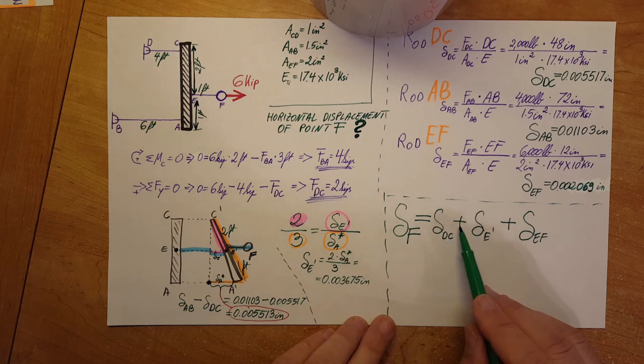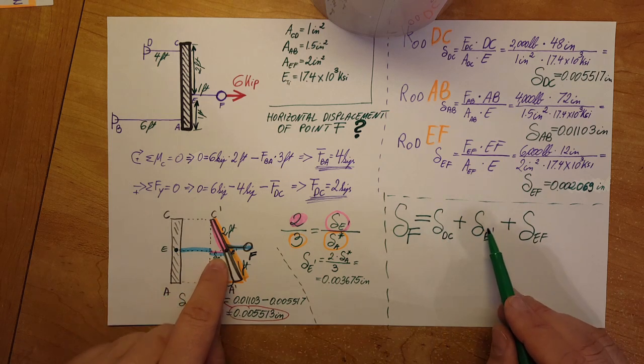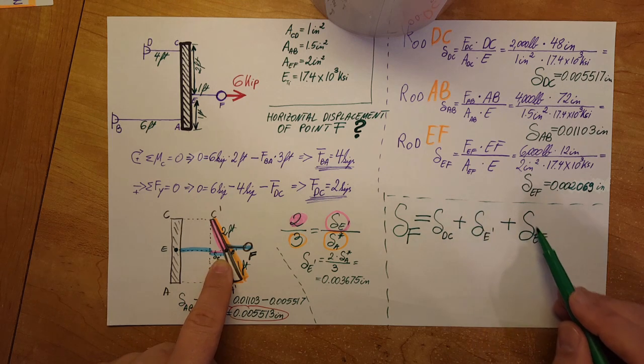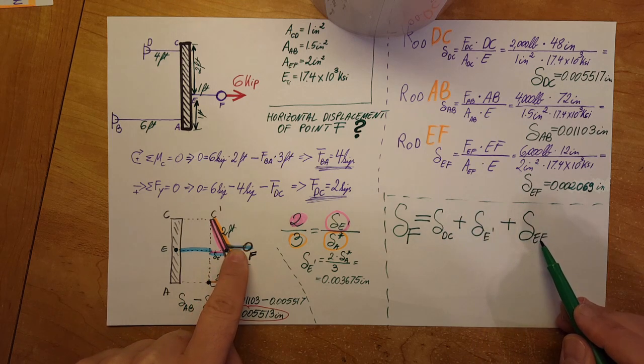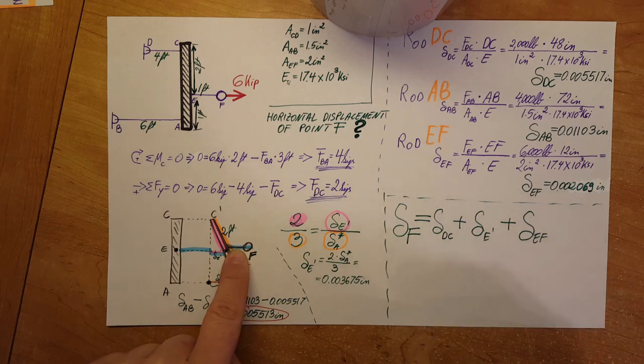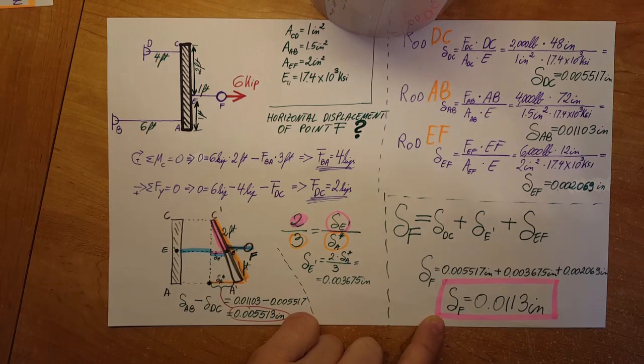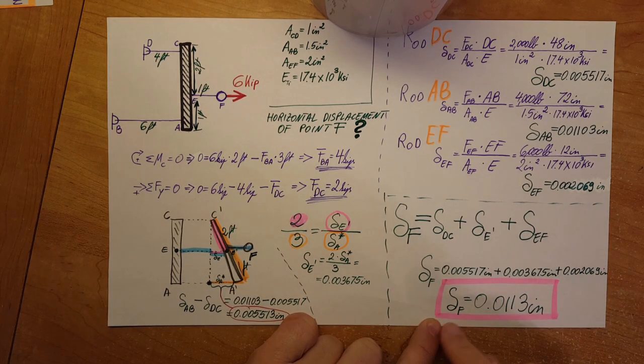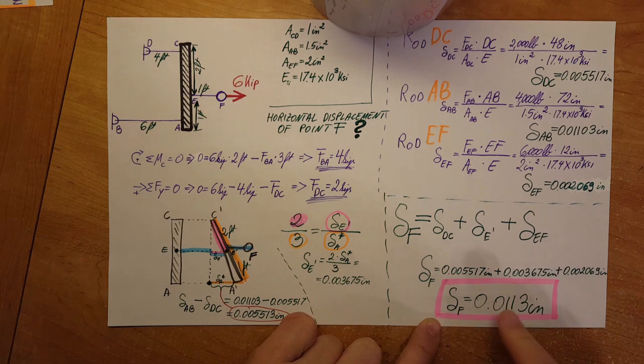There it is. I've brought it down. So displacement of point F equals the deformation of rod DC plus this little distance that we found right here plus the deformation of rod EF. I'm going to plug in the values and finally get our answer. Values plugged in, and displacement of point F: 0.0113 inches.